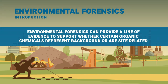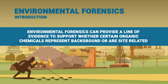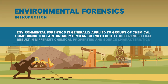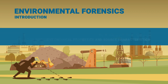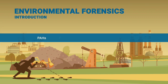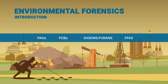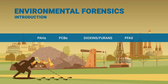Environmental forensics can provide a line of evidence to support whether certain organic chemicals represent background, generally anthropogenic, or are site-related. For background and risk assessment purposes, environmental forensics is generally applied to groups of chemical compounds that are broadly similar, but with subtle differences that result in different chemical properties and source characteristics. Examples include PAHs, PCBs, dioxins and furans, and PFAS. These are all discussed in Section 7 of the guidance document. Considering natural or anthropogenic background for these chemical groups can be important because they are widespread and persistent in the environment.